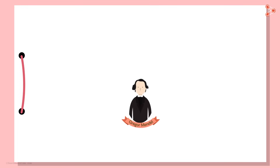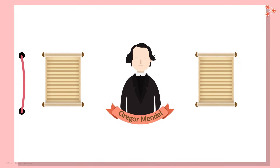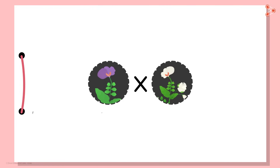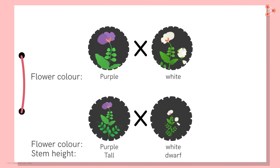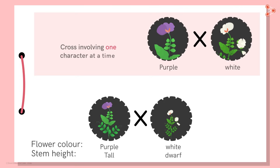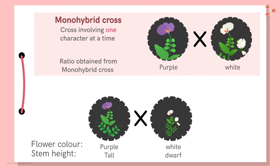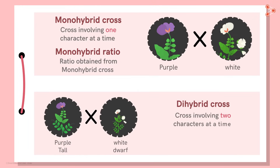Let's now move ahead and understand Gregor Mendel's experiments further. We have seen how Mendel crossed plants and studied one character at a time. After completing crossing all the characters individually, he crossed two characters at a time, followed by three and so on. The cross involving one character at a time is called a monohybrid cross — whatever we have learnt so far was a monohybrid cross, and the ratio obtained is the monohybrid ratio. How is a dihybrid cross — that is, a cross involving two characters at a time — carried out? Let's get to know that in the next part.